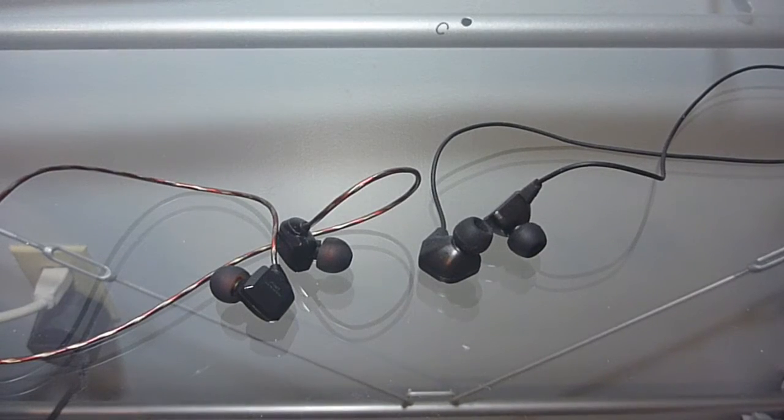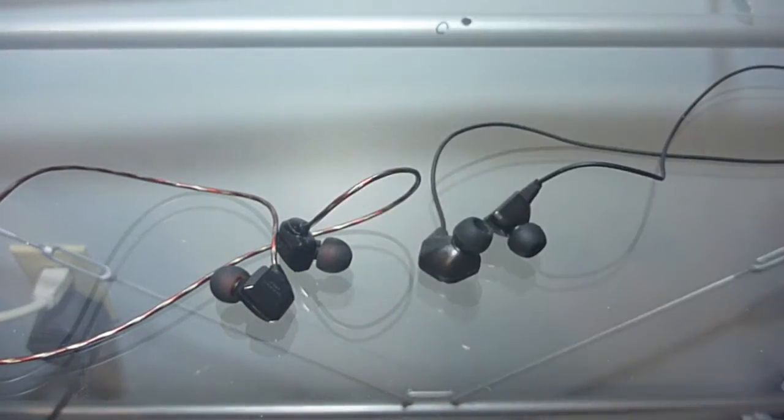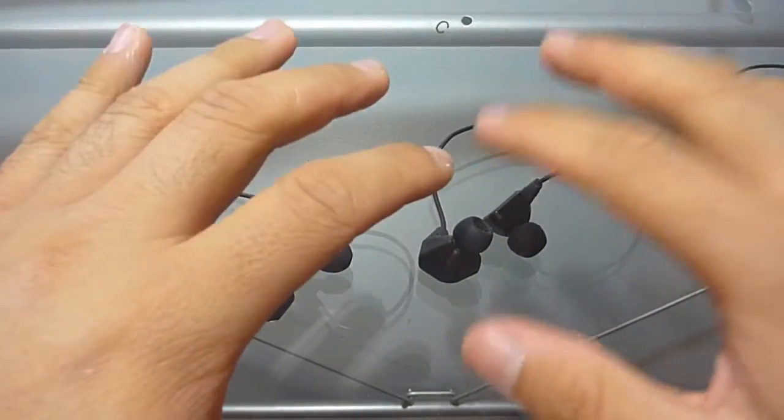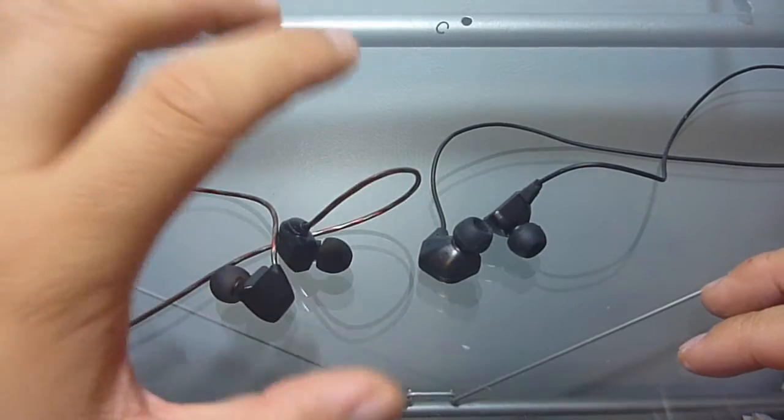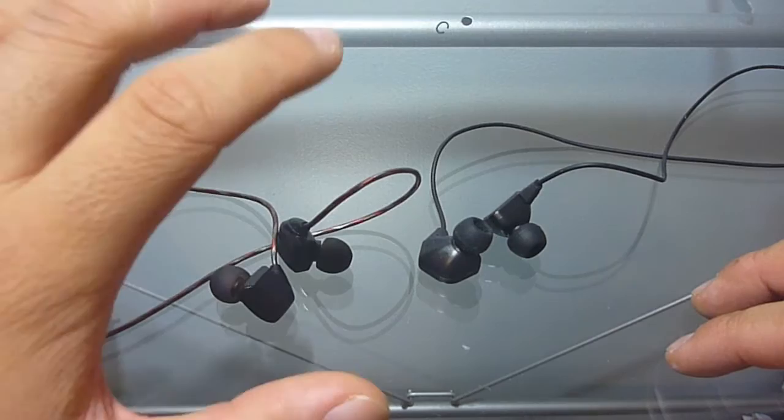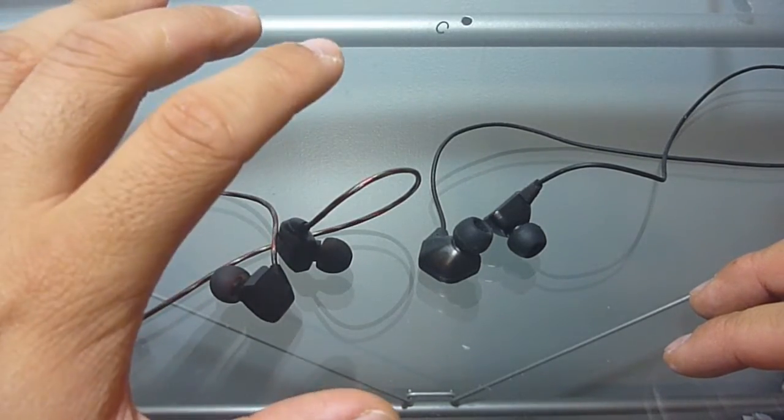Before I dive into the sound quality portion of this comparison video, I'd just like to let you know that I use both of these earphones off of my iPod Touch. And what's the Havi B3 Pro 1 video without telling you how much power it actually uses? So for the GR07s, I was able to achieve my normal listening levels at about 5 to 6 out of the total 16 which amounts to about 30% or 31%.